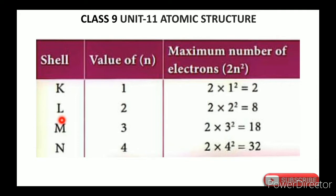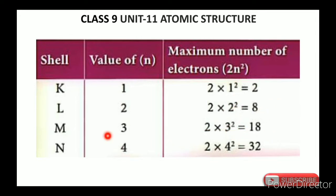The second shell (L orbit) has serial number n=2, so 2×2²=8. The second orbit can hold a maximum of 8 electrons. The third orbit: 2×3²=18 electrons. The fourth orbit: 2×4²=32 electrons.